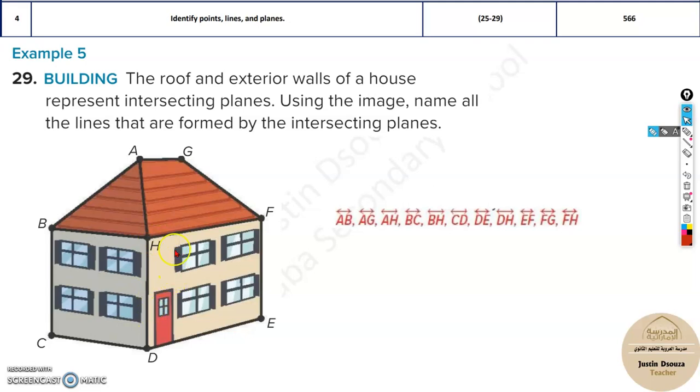These are all the possible answers. HD. And over here, they might say, for example, FG. You can either mention it as GF or FG is the same thing. So all the lines mentioned over here are all formed by intersecting of different planes.